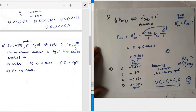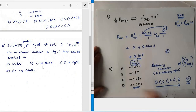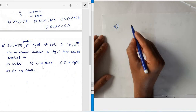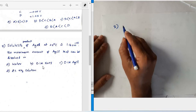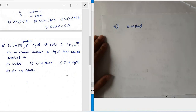Question number five: the solubility product of silver chloride at 25°C is 1.16 × 10⁻¹⁰. In which solvent can the maximum amount of silver chloride be dissolved? In 0.1 M sodium chloride, there is a common ion (Cl⁻), so due to the common ion effect, solubility will be reduced.